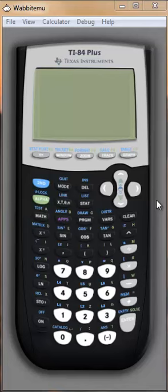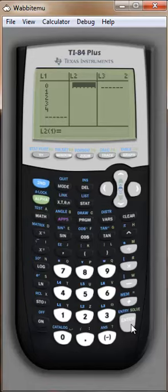First, you can see in the editor that in list 1 I have the values 0 through 4. I'm working in a situation where there are four trials, so there are 0, 1, 2, 3, and 4 possibilities of success.